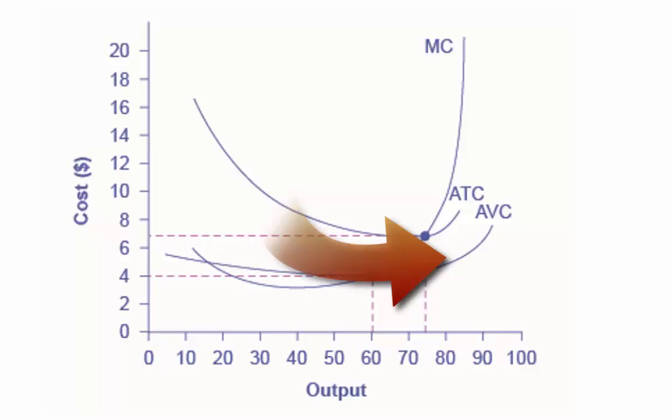Average variable cost, AVC, is calculated by dividing variable cost by the quantity produced. The average variable cost line lies below the average total cost curve and is typically U shaped or upward sloping.